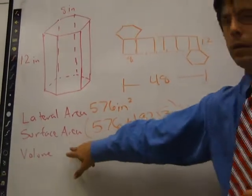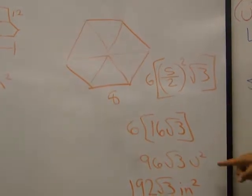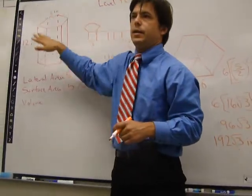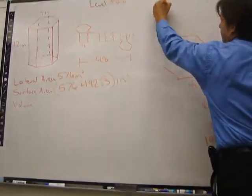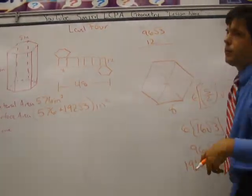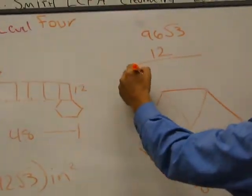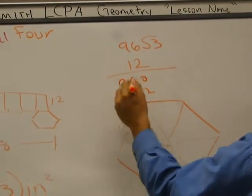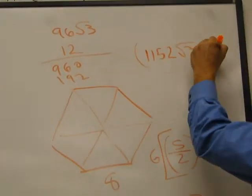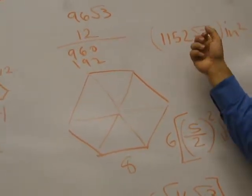And last, the volume. The volume's pretty easy. We take the area of the hexagon. So, what was the area of the hexagon? Ninety-six. Ninety-six square root of three. And we multiply it by the distance between this hexagon and this hexagon. So, it's going to be ninety-six square root of three times twelve. So, basically, it's a big math problem. Ninety-six times twelve. Tell me what you get. It's nine-sixty plus one-ninety-two is eleven-fifty-two.